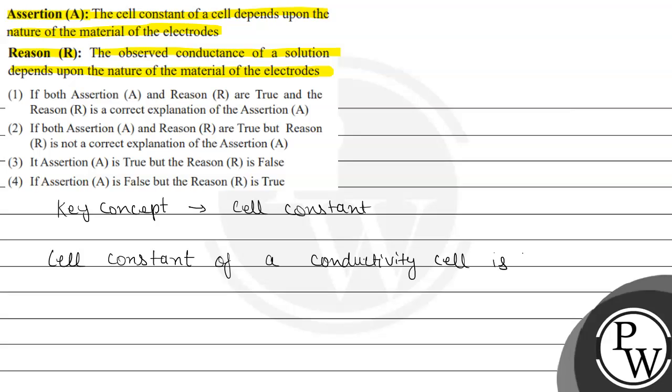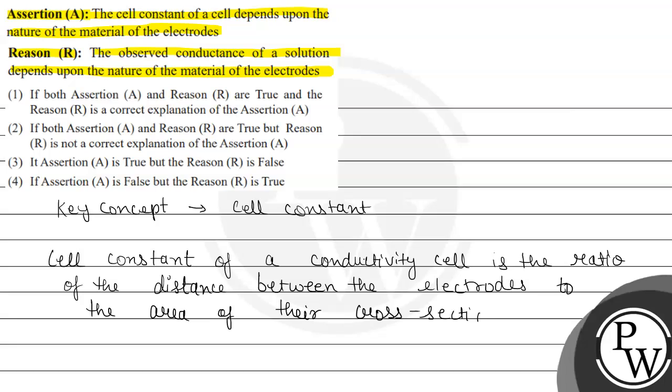Is the ratio of the distance between the electrodes and the area of their cross section. And here we should write to the area of their section.